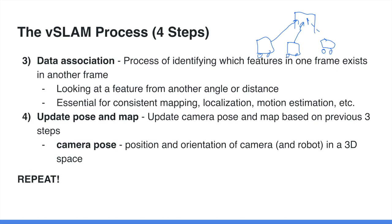The fourth step is to update its pose and map. By pose we mean the position and orientation of the camera — where it is and which direction it's pointed. The robot updates both the 3D map being constructed and its own positional estimate. This is an iterative process: every time the camera captures a frame, these four steps take place until the entire building has been mapped or the team managing the robot is satisfied with the map.